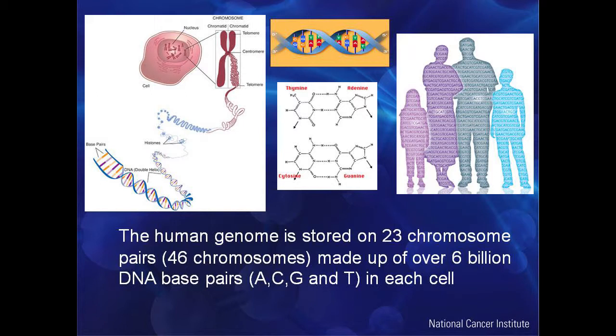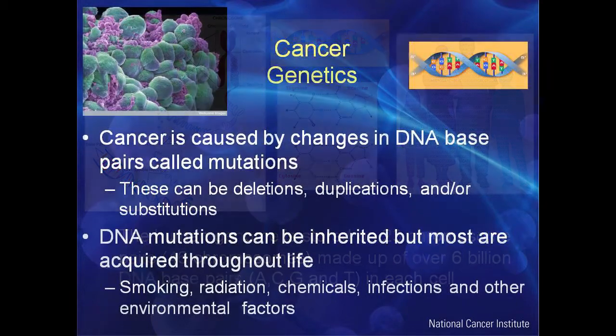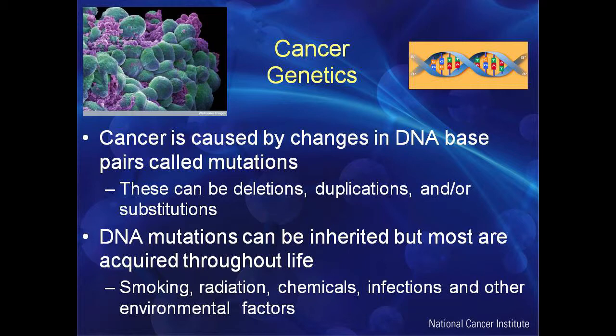Every individual has their own different genetic code, although the variations among people are actually not that different. Cancer is caused by changes in DNA base pairs called mutations. These can be deletions, duplications, and/or substitutions. It could be one base pair, multiple base pairs, or an entire chromosome that can be deleted, duplicated, or substituted.